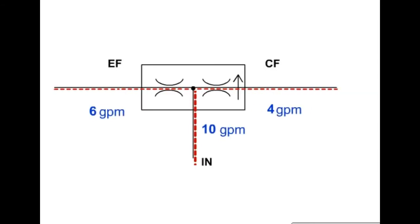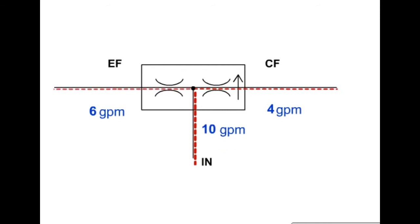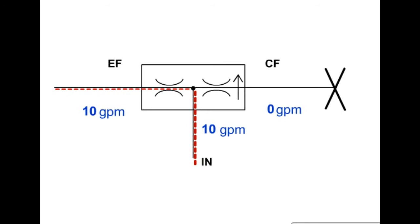If the excess port is blocked, the flow will remain constant through the controlled flow port. If the controlled flow port is blocked, all flow will go through the excess flow port.